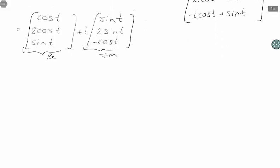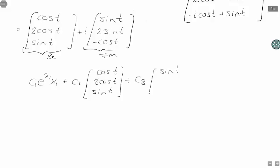So what do I have? I have c1 e to the lambda 1 times x1, plus c2 times this real part here: [cosine t, 2 cosine t, sine t], where c2 can be any constant, plus c3, where c3 can be any constant, times the imaginary part: [sine t, 2 sine t, -cosine t].